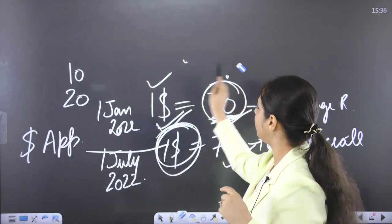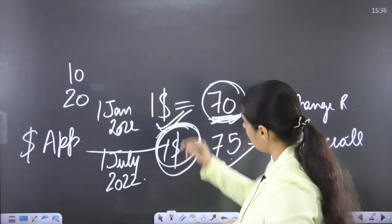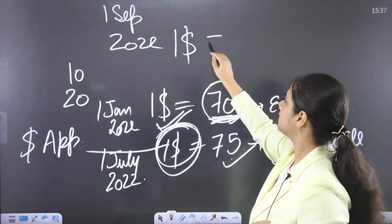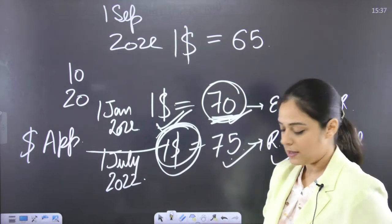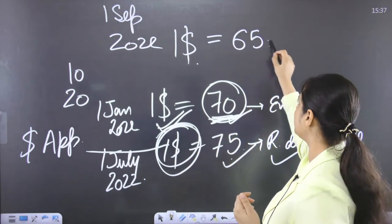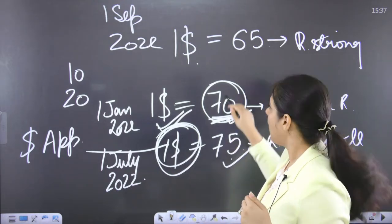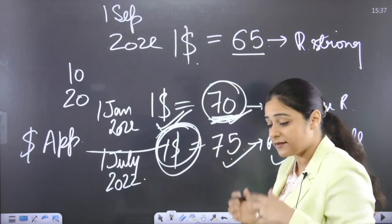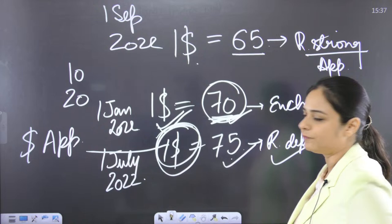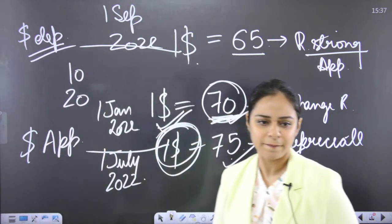Let's extend the story further. Suppose on 1st September 2022, I go to buy one dollar and the currency converter says just give me 65 rupees and take the dollar. I paid 65 rupees and got one dollar. Earlier it was 70, then 75, but now only 65 — the rupee has become strong. Its purchasing power has increased. Earlier 70 rupees were needed; now just 65 rupees gets you a dollar. So rupee has appreciated and correspondingly dollar has depreciated. Are we clear with this?